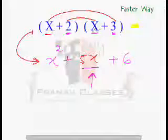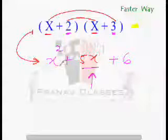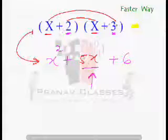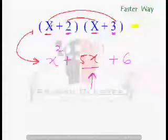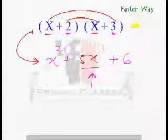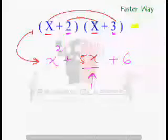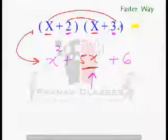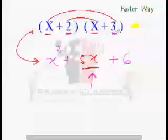x times x would be x square. Now the middle term would be do the rainbow multiplication. It would be 3x plus 2x. 3x plus 2x would be obviously 5x. And the last term just multiply the last term. 2 times 3 is 6. That's it. Question solved.